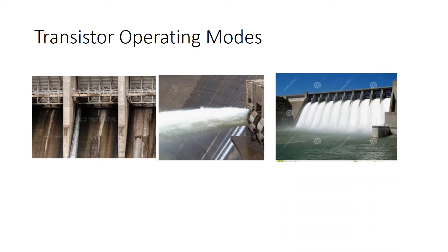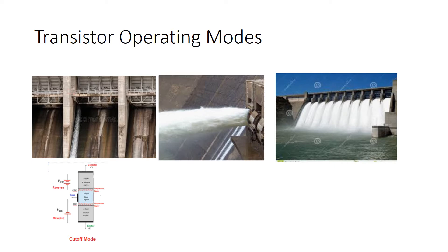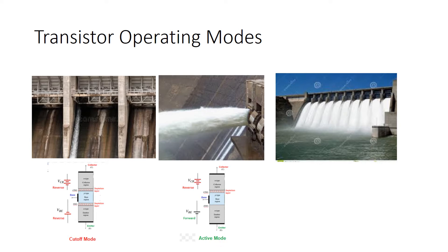The third scenario is where all the gates are open. The first case, where everything is closed, is the cutoff mode of the transistor, where both junctions are reverse biased — between base and emitter is reverse biased, and between collector and base is also reverse biased. In cutoff mode, no current flows through the transistor. The second mode, where it is partially open, is called the active mode, where we can control the flow of current to achieve amplification.